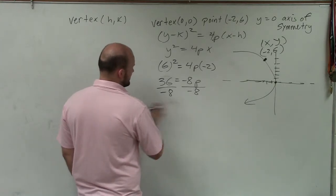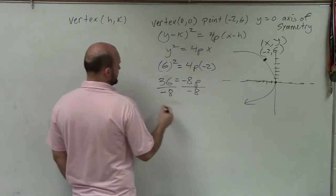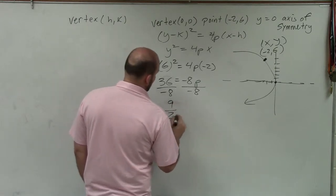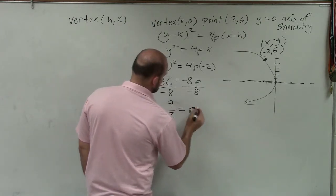Actually, let's forget fractions. I don't like fractions. Let's go ahead and do this as 9 halves. Negative 9 halves equals p.